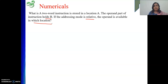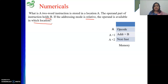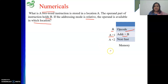We need to know the meaning of relative addressing mode. The instruction is stored at memory locations A and A+1 because it is a two-word instruction. The first part holds the opcode and the second part holds the address field value B. The address of the next instruction will be A+2.